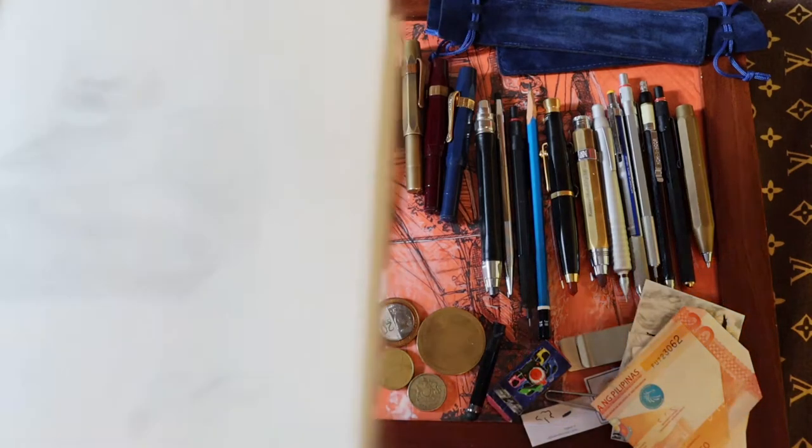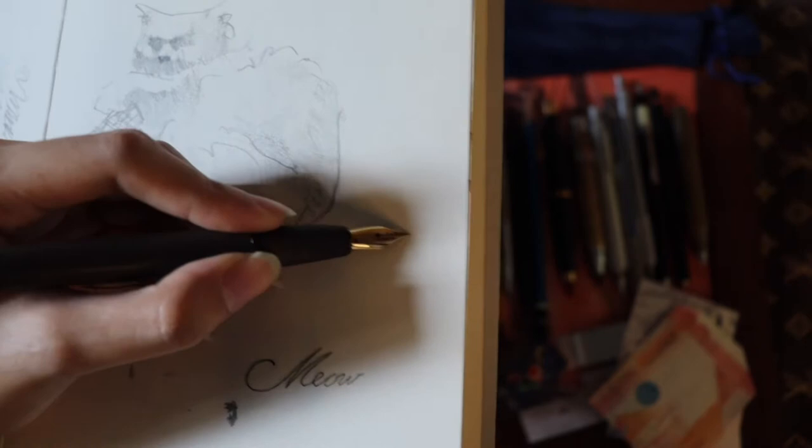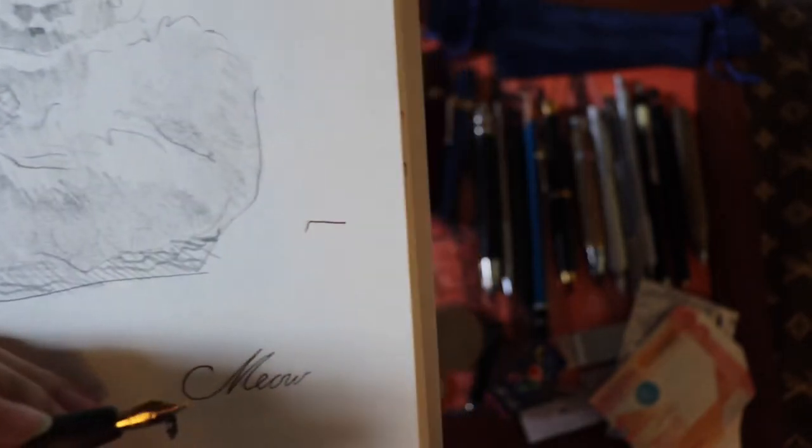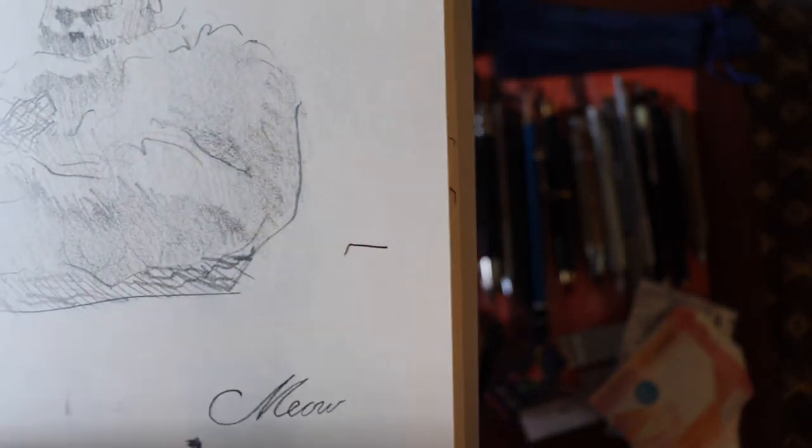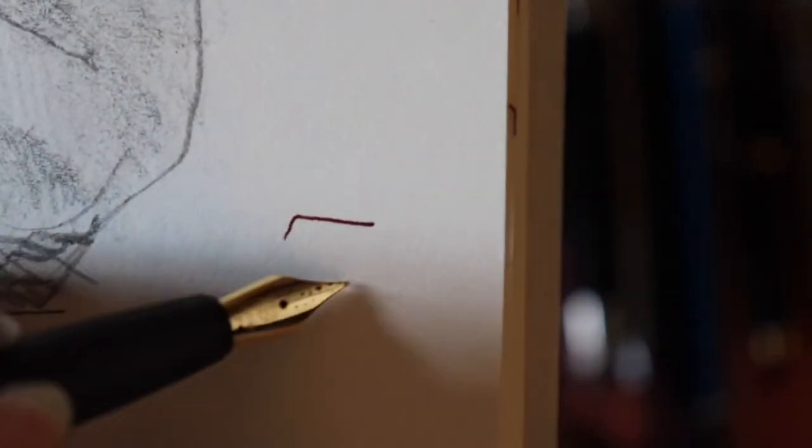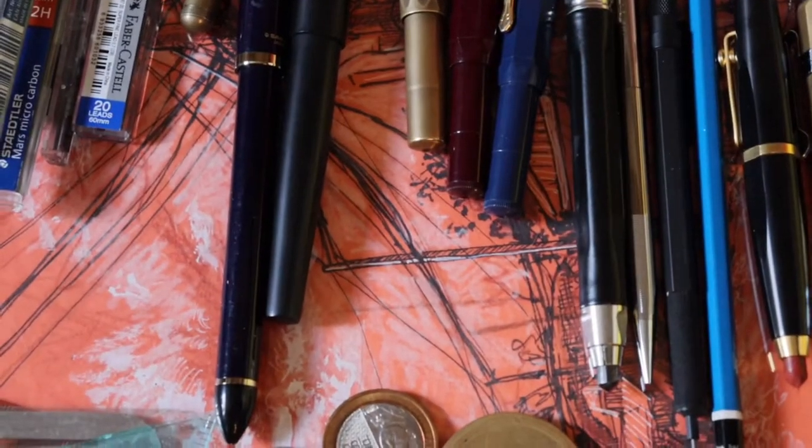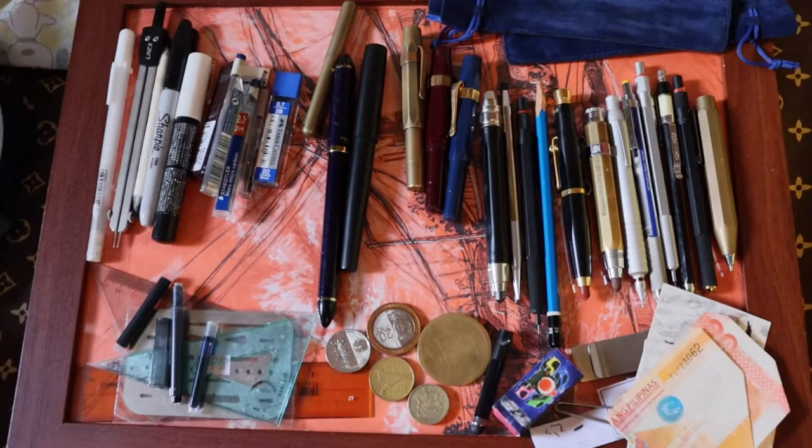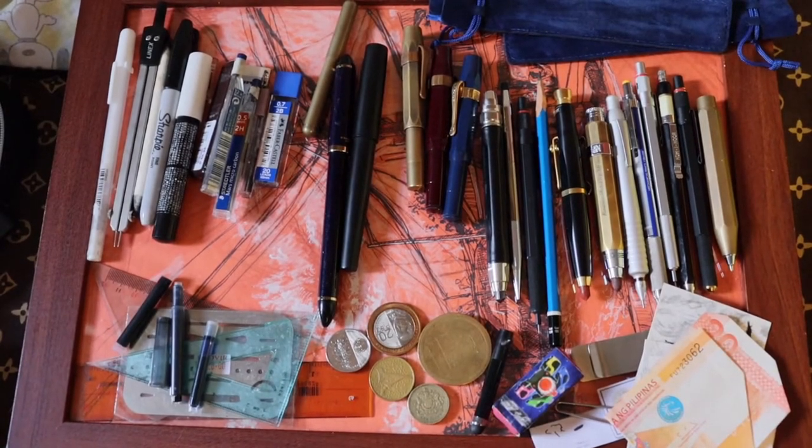And this is how the fountain pen looks like, and I have a red ink for this one. That's also the interesting part with fountain pens. You can change the colors. There are more diverse colors. There's chartreuse and even light blue if you want, blood red, stuff like that.